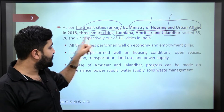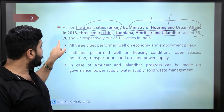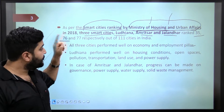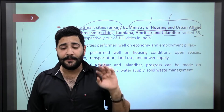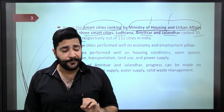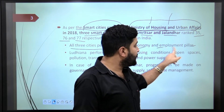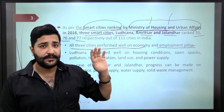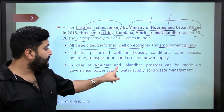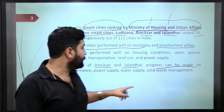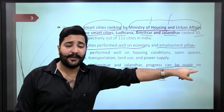Ludhiana's rank is 50, Amritsar's rank is 76, and Jalandhar's rank is 77, among 111 cities counted. All three cities performed well on the Economy and Employment pillar. However, Amritsar and Jalandhar can make progress on governance, power supply, water supply, and solid waste management. Please mentally note which city needs improvement in which area.